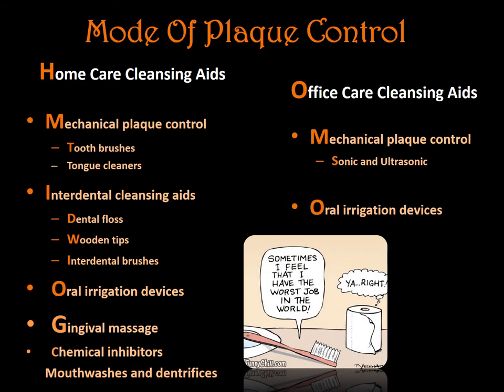The modes of plaque control include home care and office care cleansing aids. Under home care mechanical plaque control, we have toothbrushes and tongue cleaners; under interdental cleansing aids — dental floss, rubber tips, oral irrigation devices, gingival massage; and chemical inhibitors including mouthwashes and dentifrices. Under office care, we have mechanical plaque control, sonic and ultrasonic devices, and oral irrigation devices.